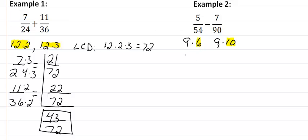So, 54 is 9 times 2 times 3, and 90 is 9 times 2 times 5. So that means our LCD then is going to be 9 times 2 times 3 times 5, which is going to give us 270.